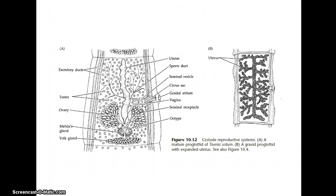If each proglottid produces 50,000 eggs, over their lifetime a worm of a huge size can produce literally millions of eggs. And that's just about the pinnacle of R selection.